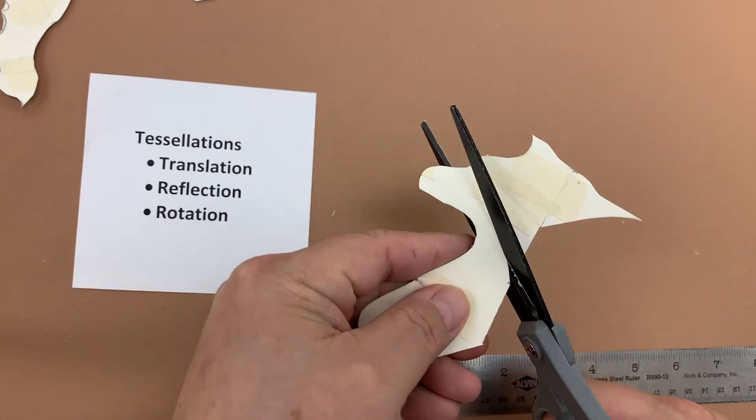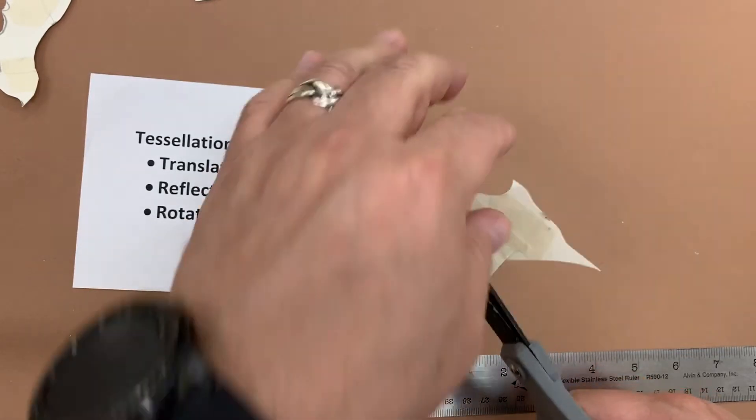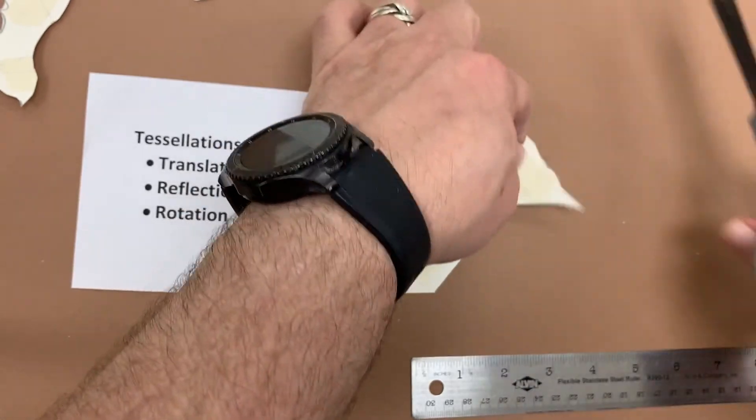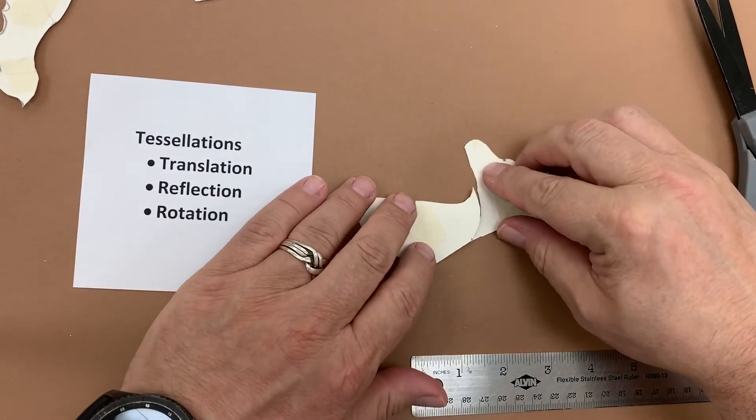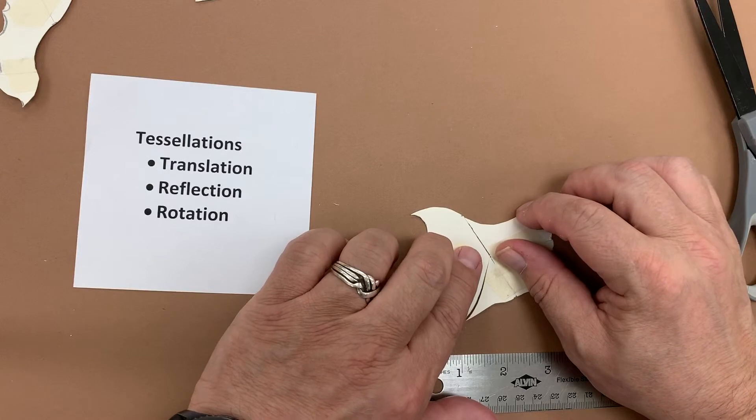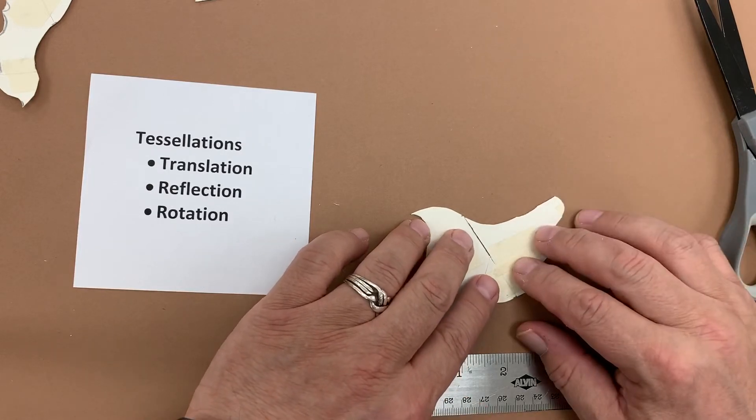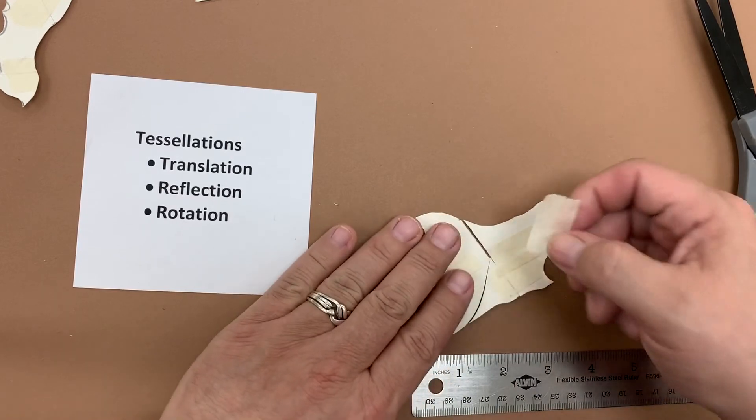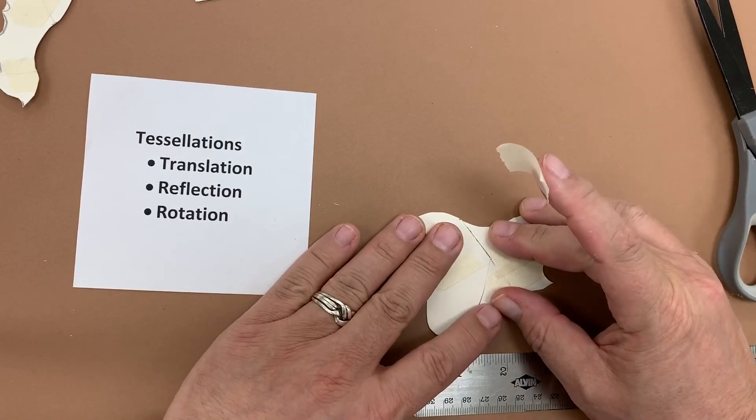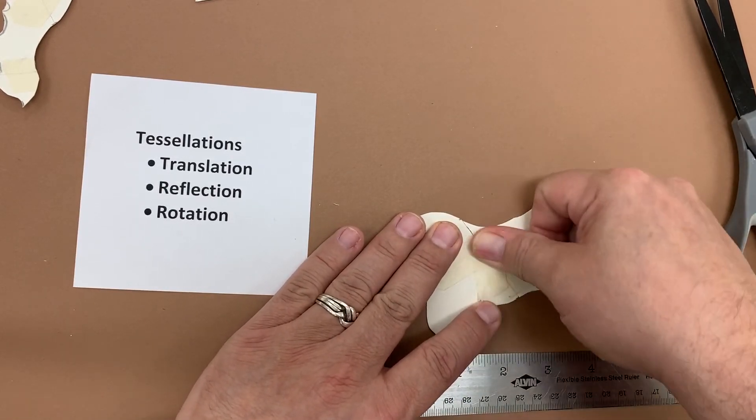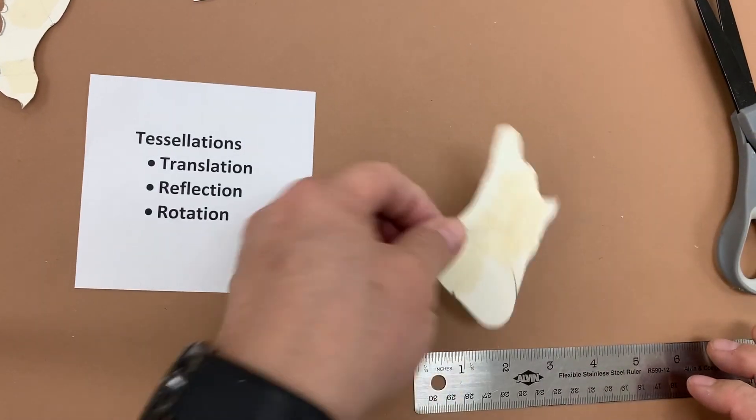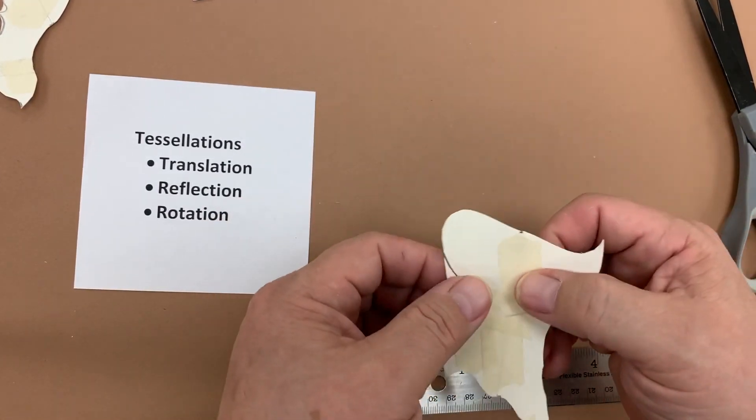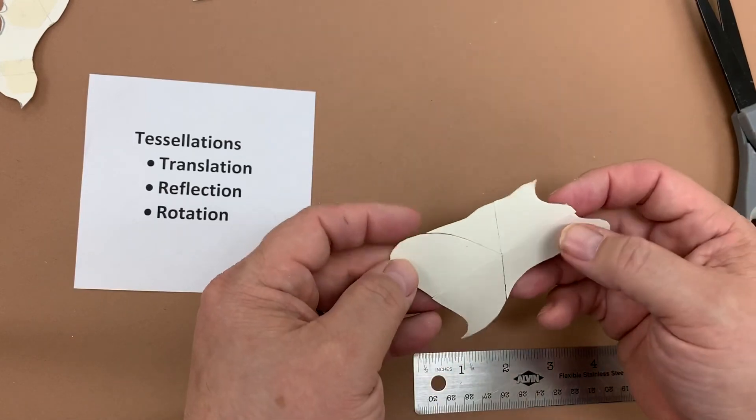One more. And again, I rotate it around and reconnect it. Oh, it filled in that gap. So sometimes that'll happen. That just proves that the tessellation is working. Okay. So now that's a piece that will tessellate infinitely and start with a parallelogram.